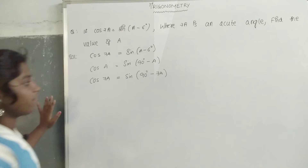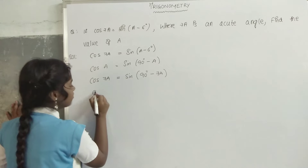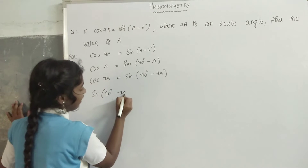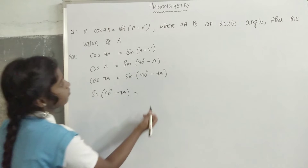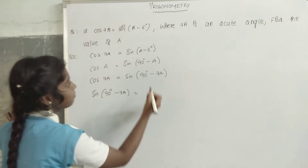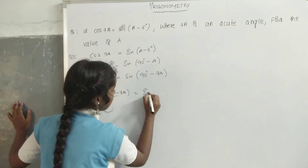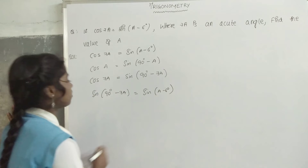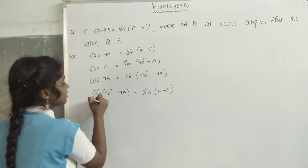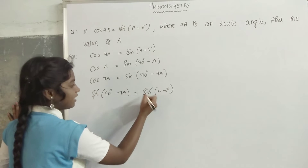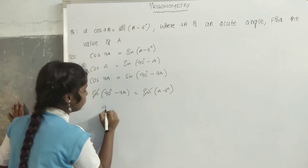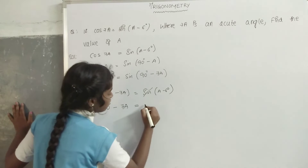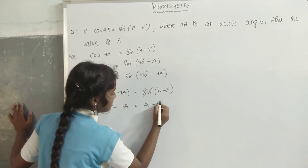We got the value. Sin(90 degrees minus 7a) is equal to sin(a minus 6 degrees). Now, sin gets cancelled. Here we have 90 degrees minus 7a is equal to a minus 6 degrees.